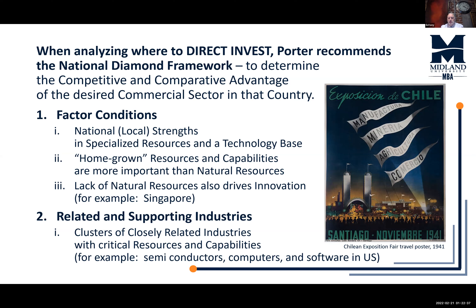The second element is related and supporting industries — clusters of closely related industries with critical resources and capabilities. Think of semiconductors, computers, and software in the United States, or the movie industry in cities like Los Angeles, Toronto, Mumbai, and Cairo. These are the ancillary groups that help promote a particular industry.